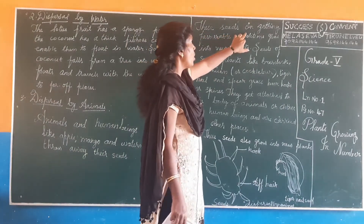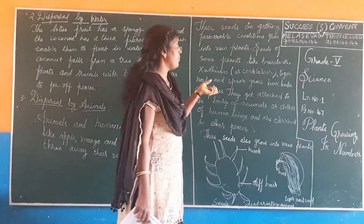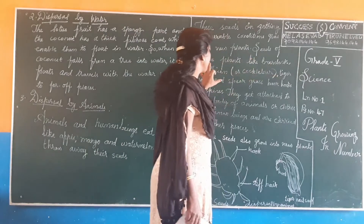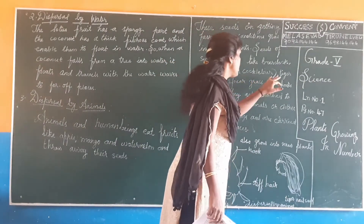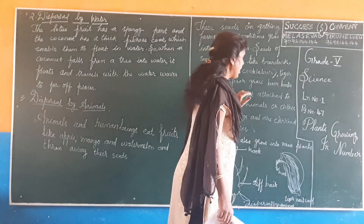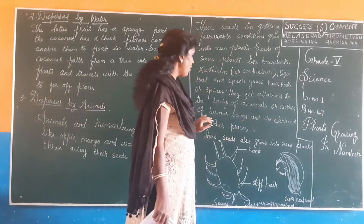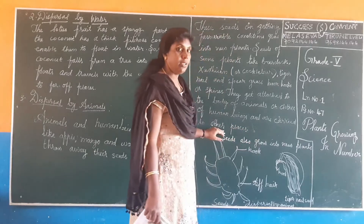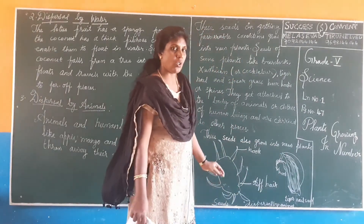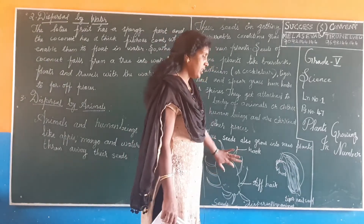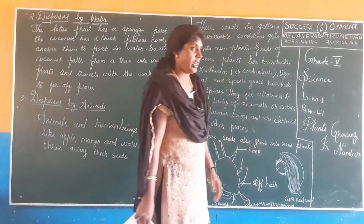These seeds, on getting favorable conditions, grow into new plants. Seeds of some plants like burdock, Santhium, or Cochlebar, tiger nail and spear grass have hooks or spines. They get attached to the body of animals or clothes of human beings and are carried to other places. These seeds also grow into new plants. This is dispersal by animals. This is a tiger nail seed.